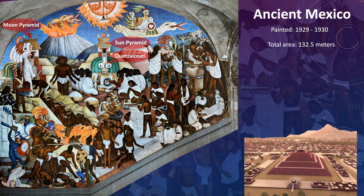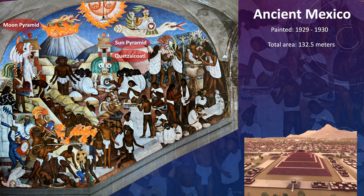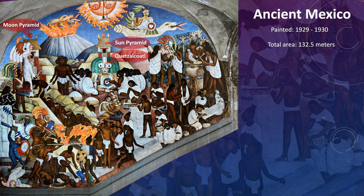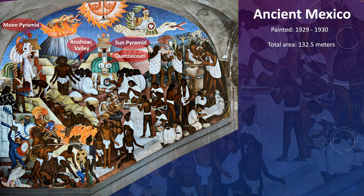Teotihuacan's pyramids of the Sun and the Moon stand in the valley behind Quetzalcoatl. Teotihuacan was one of the largest and greatest urban centers in Mesoamerica, especially northern Mesoamerica, but its influence spread as far as Central America. The mural also appears to show the Valley of Anahuac in Central Mexico, where the Mexica ruled.